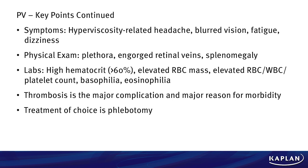Secondary polycythemia comes from hypoxia or an EPO-secreting tumor — those will have high serum EPO levels. This is a key takeaway because you might get a question about whether EPO is low or high. Key points: this patient presented with symptoms that all relate to hyperviscosity — meaning tons of red blood cells making the blood really thick with cells and platelets. Because of that, you get headache, blurred vision, fatigue, and dizziness. On physical exam you see plethora, splenomegaly, and engorged retinal veins — a classic presentation. On labs, high hematocrit and all cell lines elevated. All that excess blood can stagnate and clot, causing thrombosis — which is why it's the major complication.